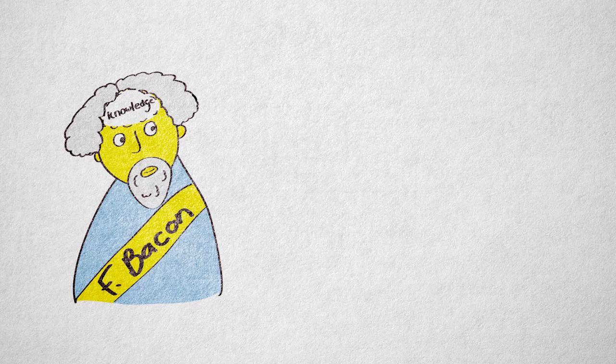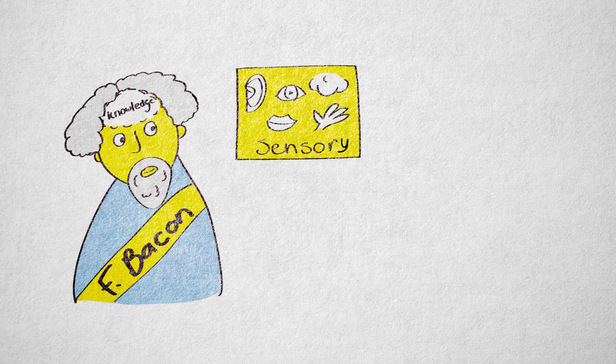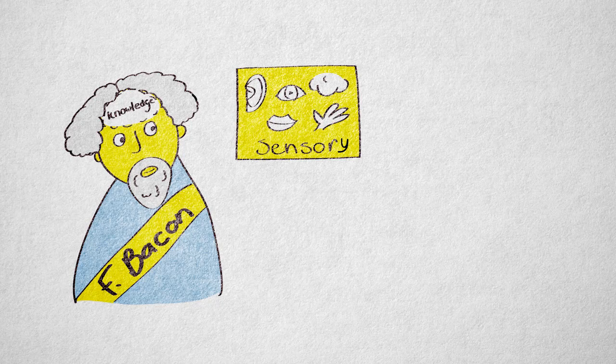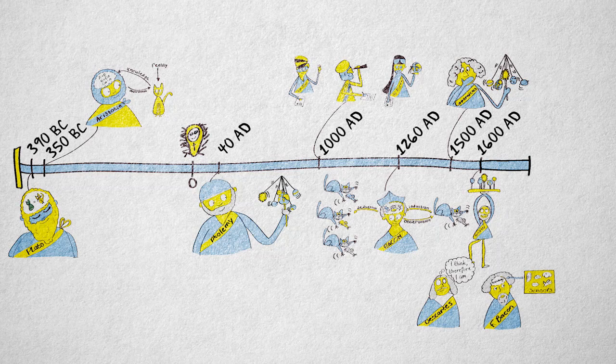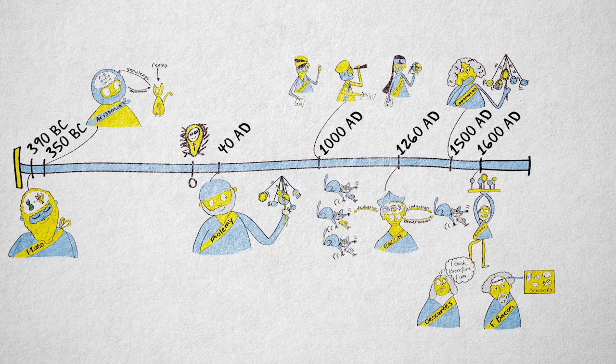Bacon believed that all knowledge, not just the first principles, should be obtained only through this inductive method, generating explanations based on sensory experiences. This is why he's considered the father of empiricism, where empiric means relating to experience or observation.